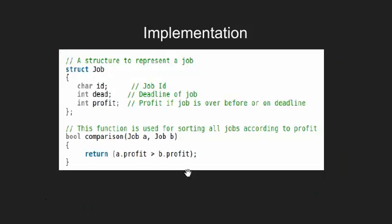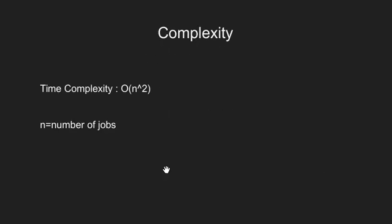Here we have the Job structure and comparison function for reference. Every job has an ID, a deadline, and a profit. The comparison function helps sort the jobs according to profit. The time complexity of this algorithm is O(n²), where n is the number of jobs.